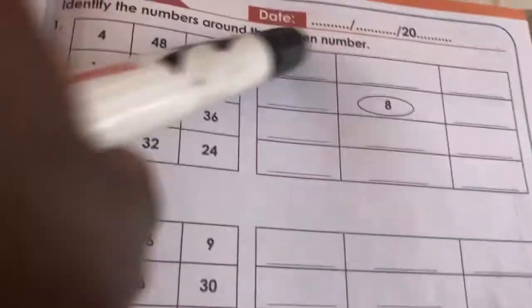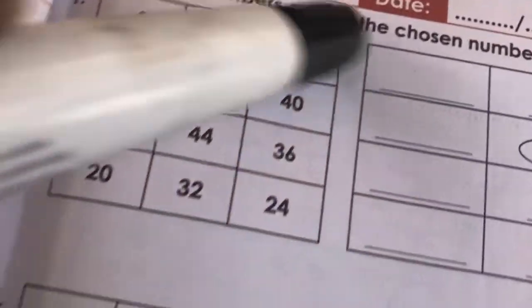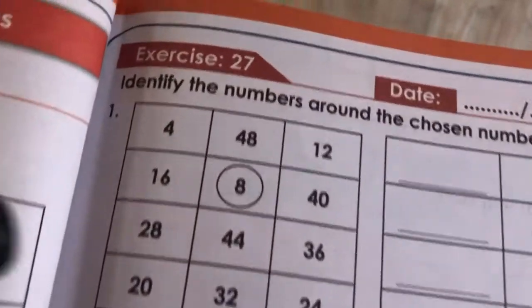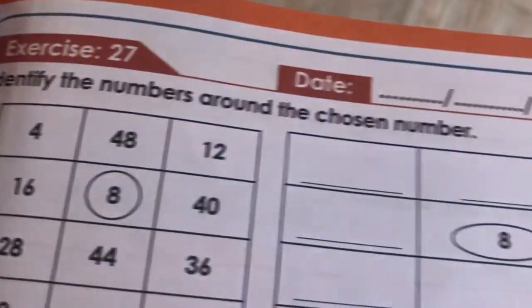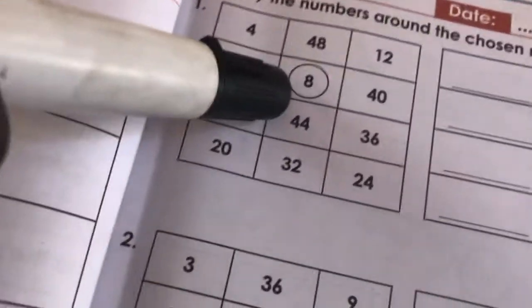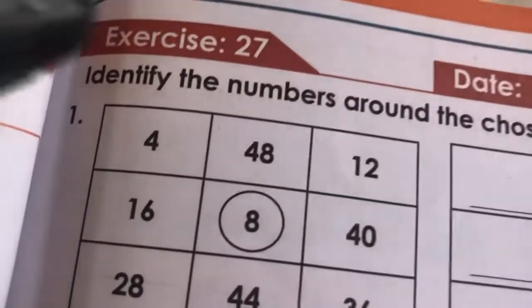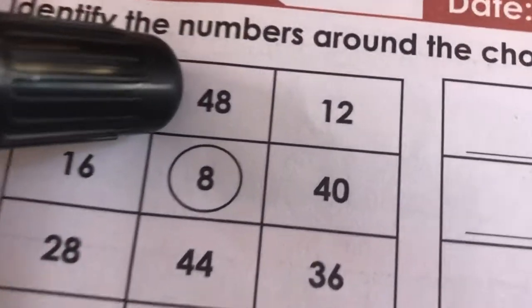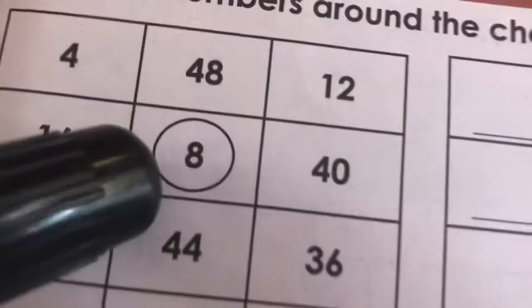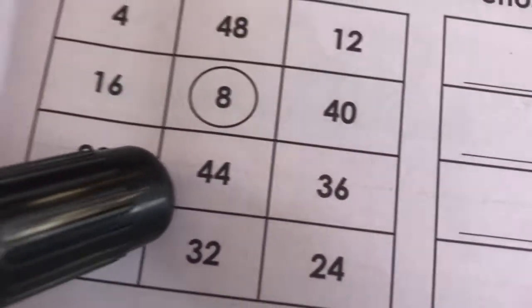Identify the numbers around the chosen number. This is your chart. The chosen number is 8. Now, the number above 8 will be what? 44. Alright.